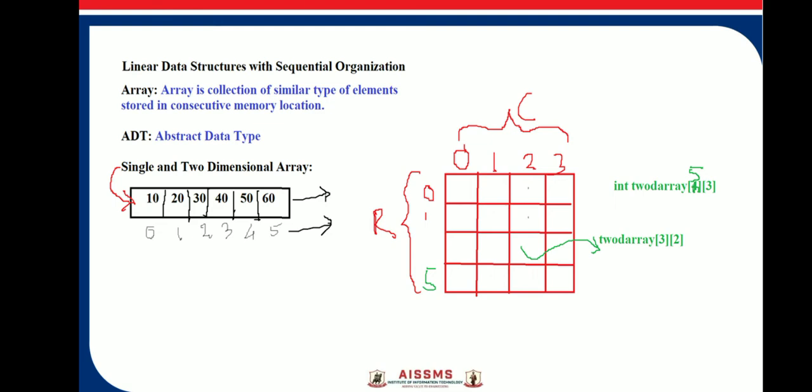An array is defined as a collection of similar type of elements. Arrays can be single dimensional or multi-dimensional. A one-dimensional array consists of only one row and a number of columns. The locations 0, 1, 2, 3, 4, 5 are the indices of elements in a single dimensional array, and with those indices we store corresponding values.